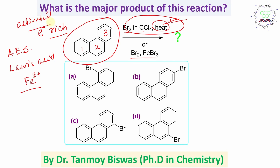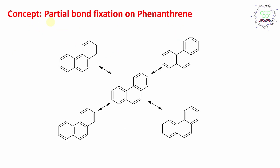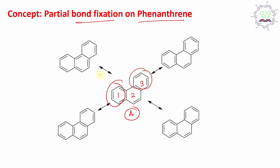Now the question is: where will the reaction happen? For that purpose, you need to know the partial bond fixation concept of phenanthrene. If you look at the main structure provided in the problem, let us consider structure A. You can see in these four structures what we have done — we have drawn either resonance of ring one, ring three, or both one and three, or both two — all are done.